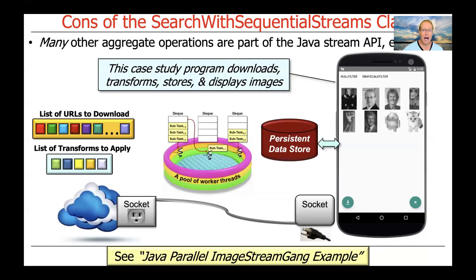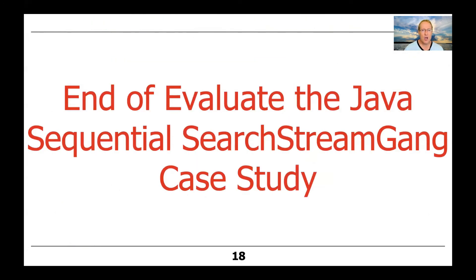We will also look at other examples later in the course when we talk about parallel streams, examining a fuller range of operations beyond what we've looked at here — things like flat map and other capabilities. You'll also get a chance to program with some of these capabilities in upcoming assignments. So that was a quick overview, stepping back to evaluate the pros and cons of this particular example. Subsequent implementation strategies will go further than what we've done here.